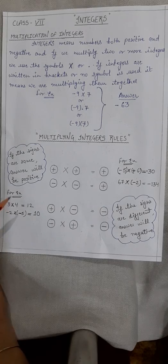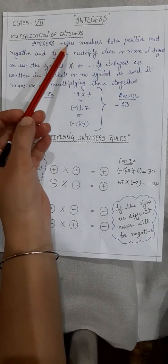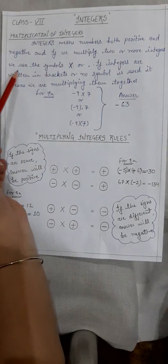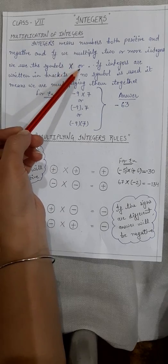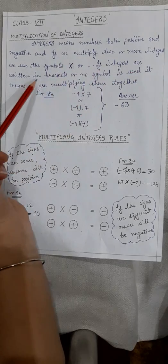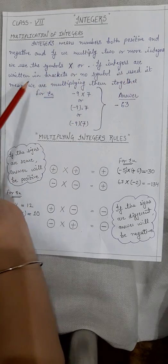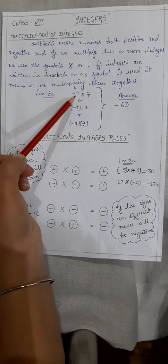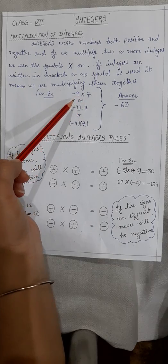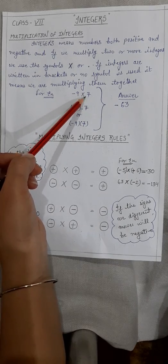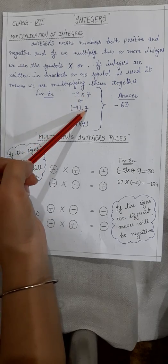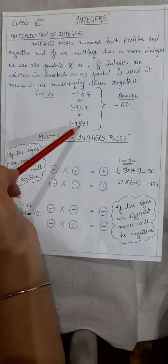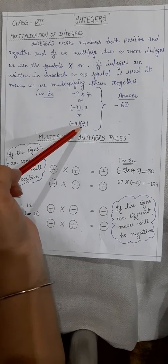So now let's start with the multiplication of integers. Integers means numbers both positive and negative, and if we multiply two or more integers, we use the symbol of cross or dot. If integers are written in brackets or no symbol is used, it means we are multiplying them together.